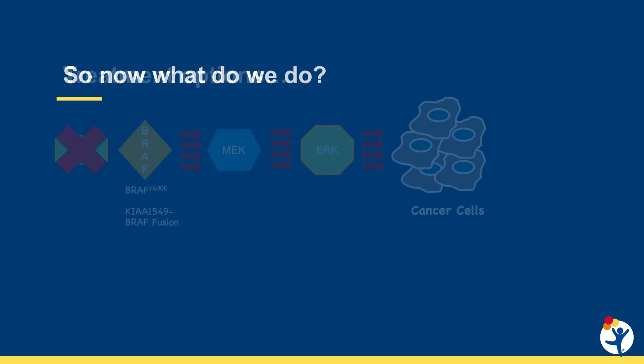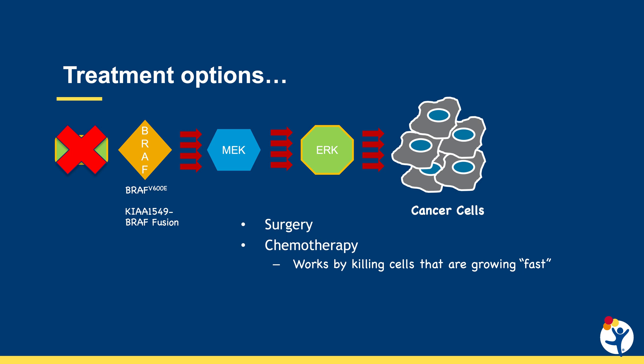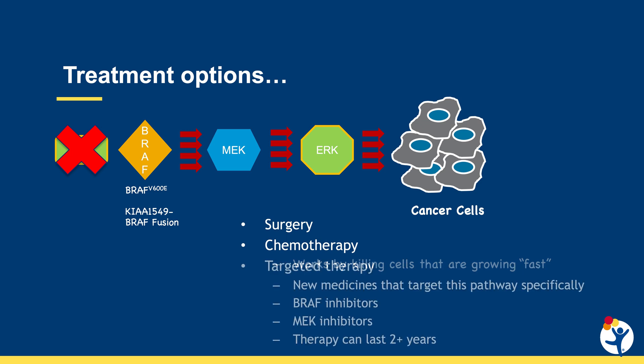So now what do we do? When we think about treatment options for kids with these tumors, we want to think first about surgery. The most important thing is to remove as much of the tumor as you safely can, and this is a discussion you have with your neurosurgery and neuro-oncology team. The next typical therapy is chemotherapy — the standard medicines that people think about. Chemotherapy works by killing cells that are growing fast, in this case the cells being signaled by ERK to grow when they really shouldn't be.